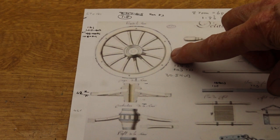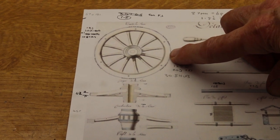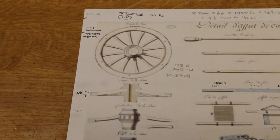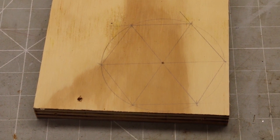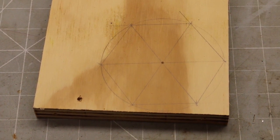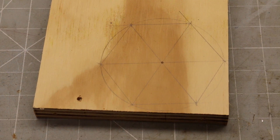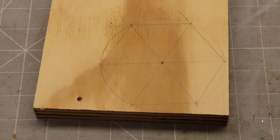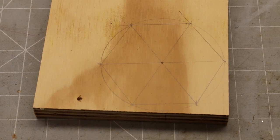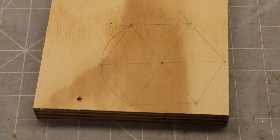I shall start by making the six outer rim parts known as fellows. The first thing I'll need for making these is a jig to hold the wood in place. I'm cutting this out of 18 millimeter ply and first I need to mark out a circle 100 millimeters in diameter and divide it up into six. Memories of school geometry here.